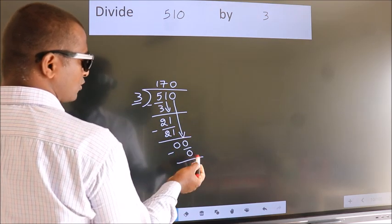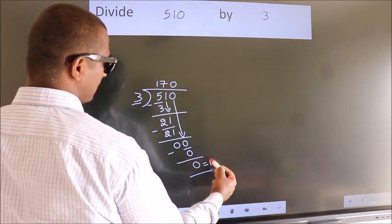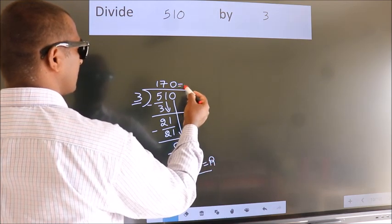No more numbers to bring it down. So we stop here. This is our remainder. This is our quotient.